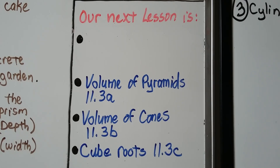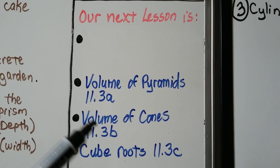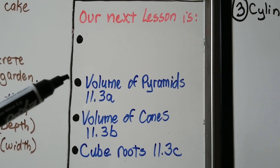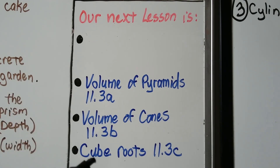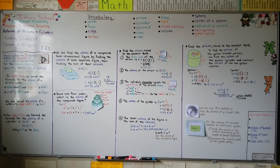That's it for section 11.2. We're going to move on to 11.3, which is split into A, B, and C — starting with the volume of pyramids, then the volume of cones, and then cube roots in 11.3c. Make sure you have your volume formulas written in your notes, and now you know how to find the volumes of composite 3D figures. Keep trying — I believe in you. I hope you do well, and I'll see you next time.